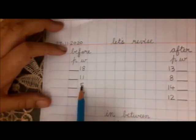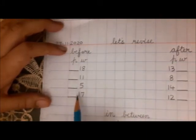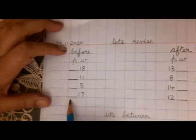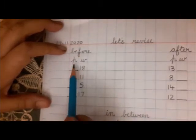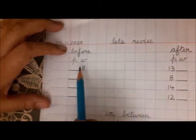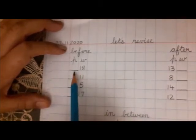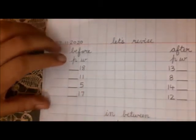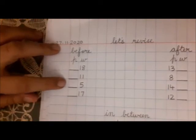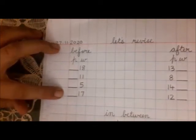What comes before 5? And what comes before 17? Before ka matlab pehle — toh yahaan pe dash, number ke pehle aa raha hai. So you will do this yourself.